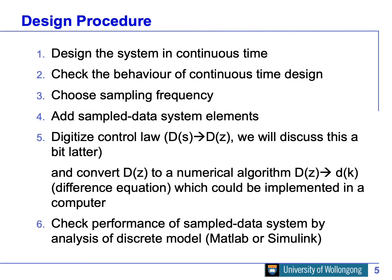There are six steps in the design process for design by emulation. Step one is to design a continuous-time controller and check its performance — making sure the required standard is satisfied. The criteria depend on the plant and goal: sometimes it's rise time, steady-state error, overshoot, bandwidth, phase margin, or gain margin. Once you have your controller, you check whether these criteria are satisfied.